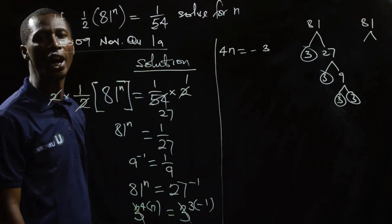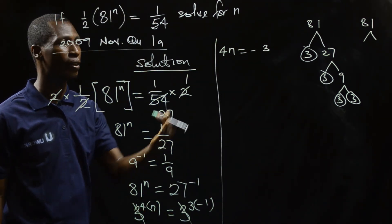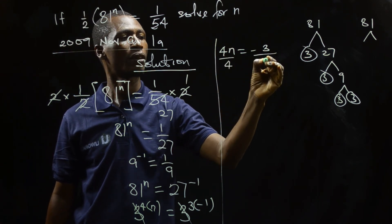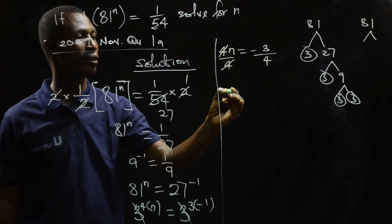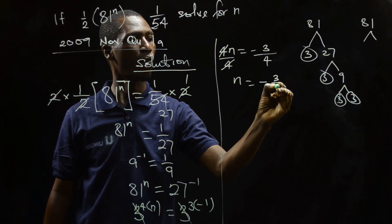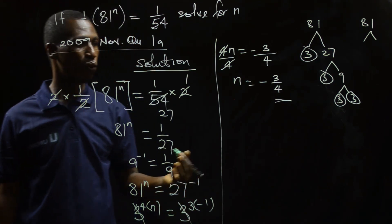So what I do now is I divide through by 4. So I divide here by 4 and here by 4. 4 cancels. n equals negative 3/4. So that is the value of n.